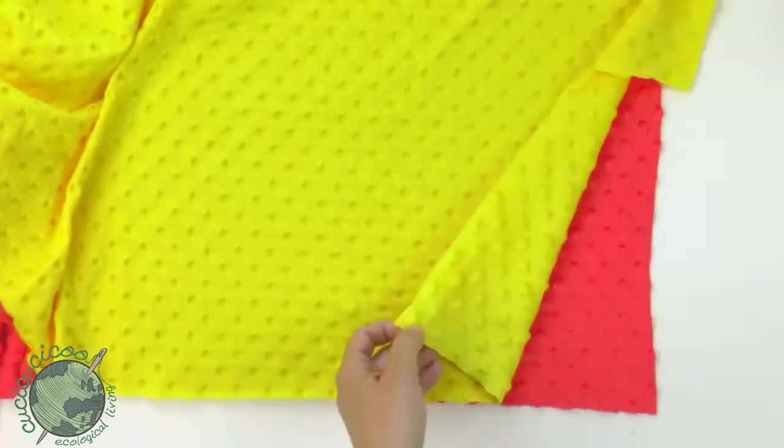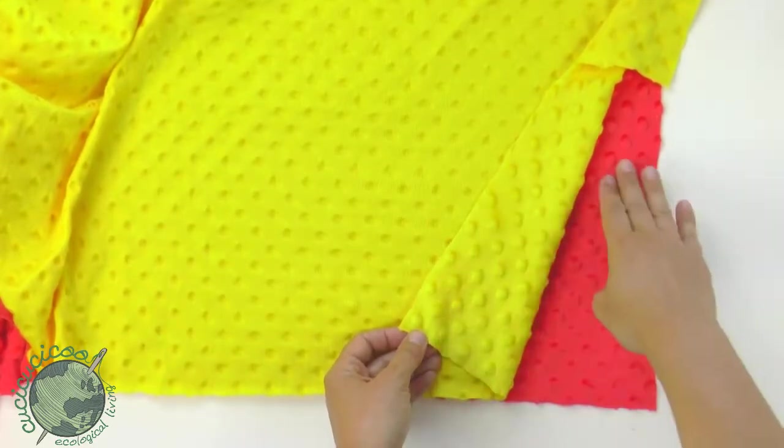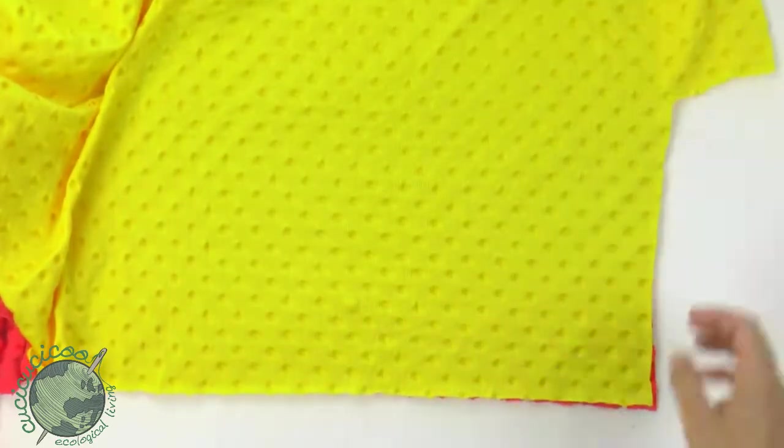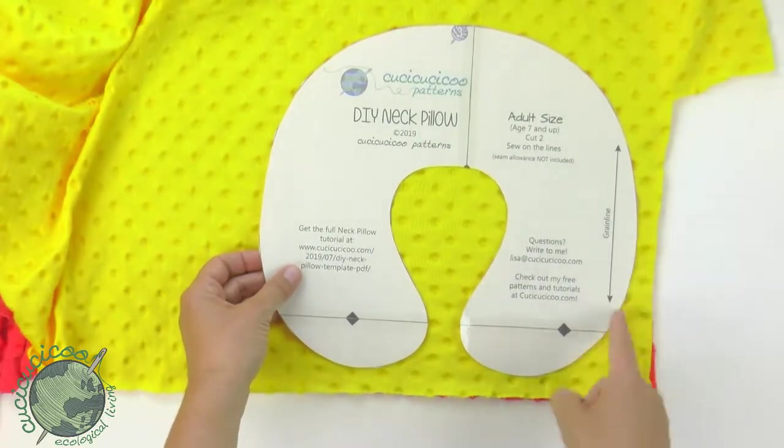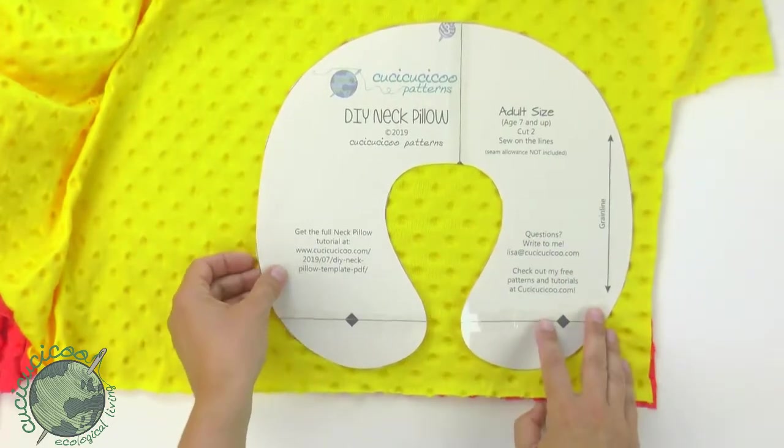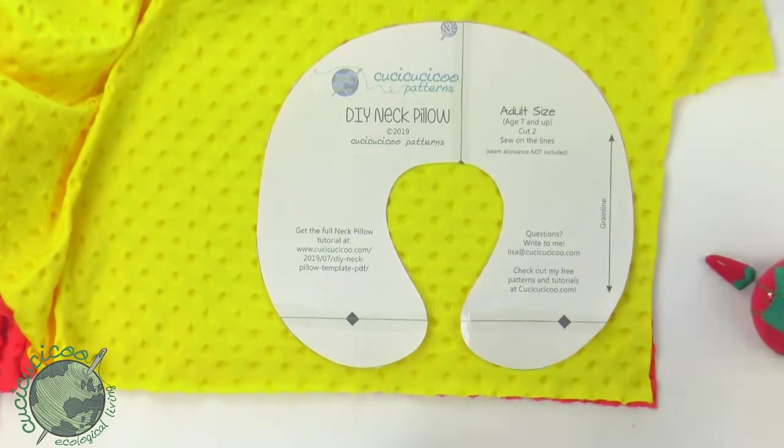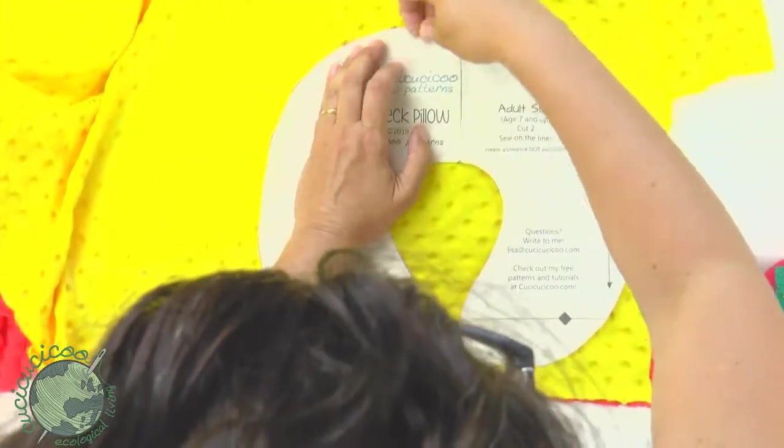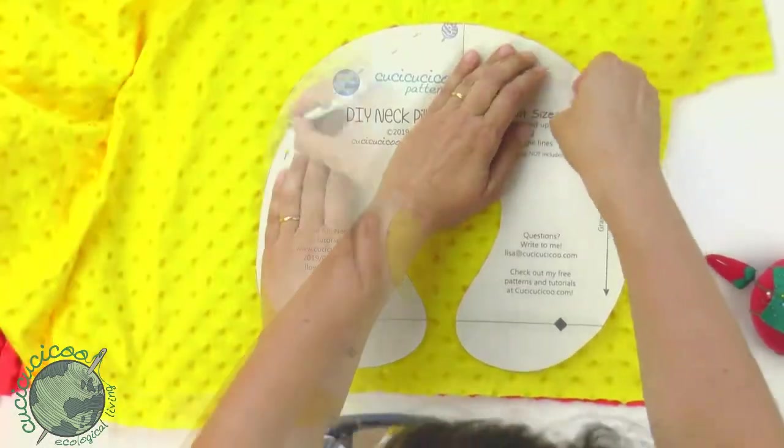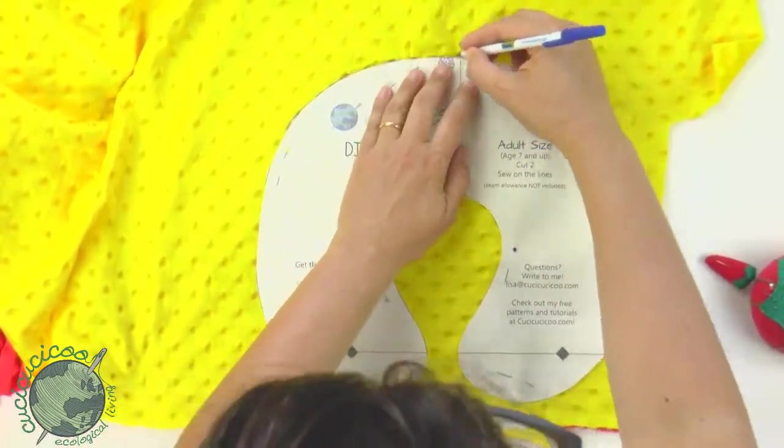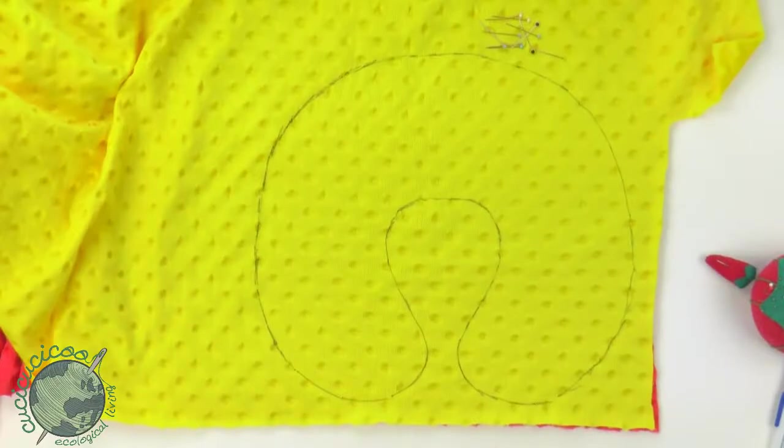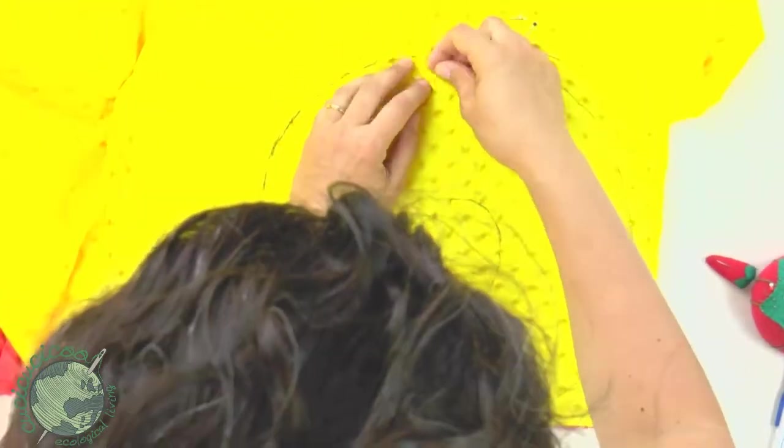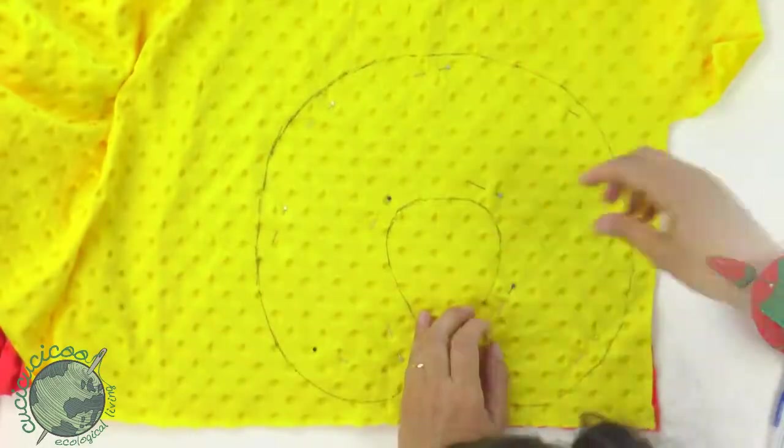Put your two fabric layers together right sides facing. Again make sure that the nap is going down if you have a nap on your fabric. Put the piece down. We're going to sew along the traced line so leave a little bit of space around it. Okay pin it down if you want to keep it in place. Then trace all around the pattern. Remove the pattern piece and just add some pins to keep it in place again.